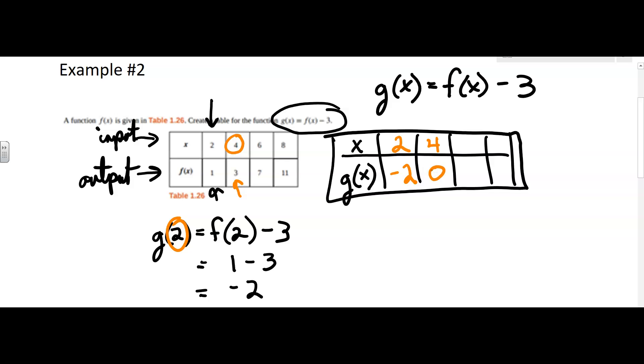Now, if you don't like that, you can write it out. You can say g of 4 is going to equal f of 4 minus 3. But we know what f of 4 is from the table. And that's how we're getting that 0.